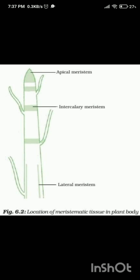The third type is lateral meristem. It is found along the sides of stems and roots, and is responsible for secondary growth, which results in the thickening of stems and roots. Lateral meristem produces secondary tissues called xylem and phloem.